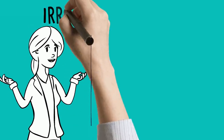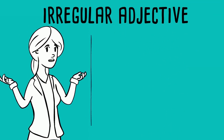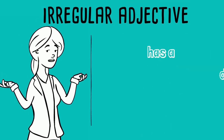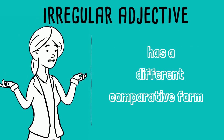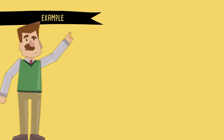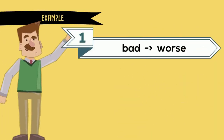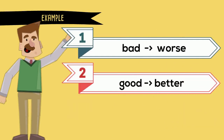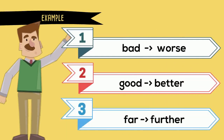Rule number six: irregular adjectives. Irregular adjectives have a different comparative form. For example: bad → worse, good → better, far → further.